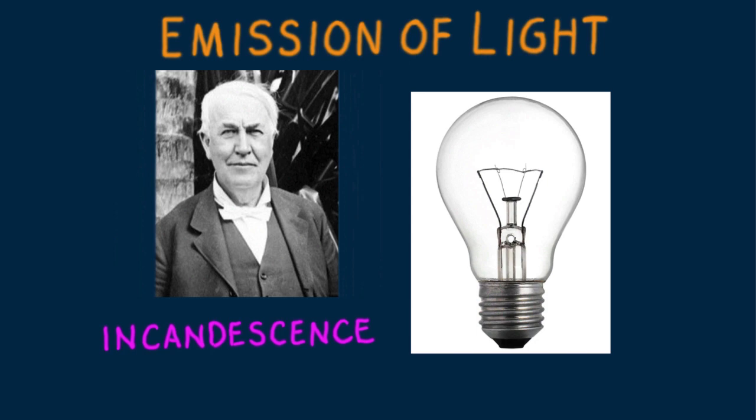The light can have a reddish tint, as from the heating element of a toaster, or a bluish tint, as from a particularly hot star. Or it can be white, as from the familiar incandescent light bulb.